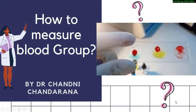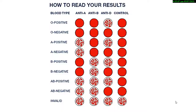Dear learners, in this video you will learn about how to measure blood group practically. To measure blood group we require the anti-serums like anti-A, anti-B, and anti-D, and a control sample which contains only blood.